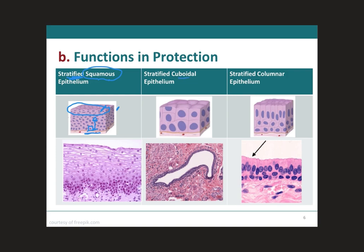Next, we have the stratified cuboidal epithelium. As you can see, it's made of two cell layers in which the cells in the apical layer are cuboidal in shape. This is a fairly rare type of epithelium. They're located in ducts of adult sweat glands and also in the esophageal glands and part of the male urethra. The main thing that you need to know is that it functions for protection.